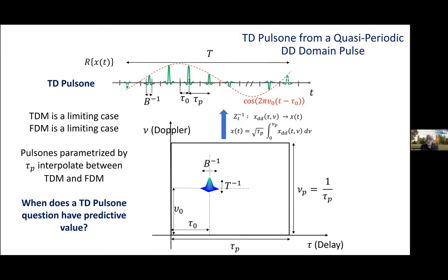So, here we're looking at the time domain realization of a delay-Doppler domain pulse. Mathematically, it's given by the inverse time Zak transform. There's an inverse frequency Zak transform and a frequency domain pulsone. And I'll refer you to the magazine article for details of those.